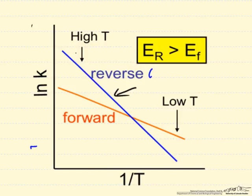So reverse is the endothermic, and the forward is the exothermic reaction. It has lower activation energy. And this is plotted as 1 over the absolute temperature.